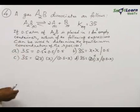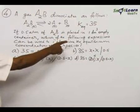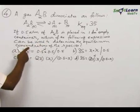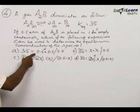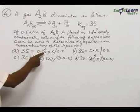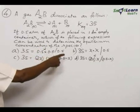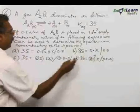If 0.5 atmosphere of A₂B is placed in 1 dm³ empty container, which of the following expressions can be used to determine the equilibrium concentration of the species? Option A: 35 = 0.5² × 0.5 / 0.5. Option B: 35 = x × x / 0.5.